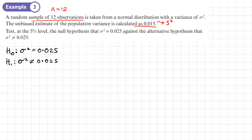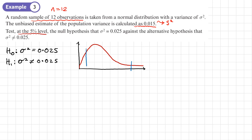Next, I'll do my little sketch to help me accept or reject correctly. Here's my chi-squared distribution. Since we're testing at the 5% level, the combined area of the tails is 5%. It's always going to be a two-tail test because H1 is 'not equal to'. So this lower tail area is 2.5%, this upper tail area is 2.5%, and remember for the upper tail I'll actually be using 97.5%. Now we'll calculate our test statistic.